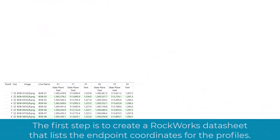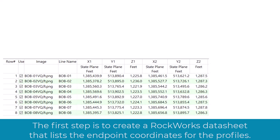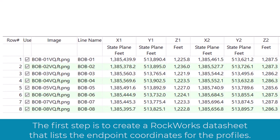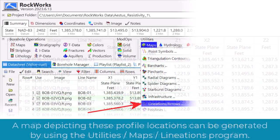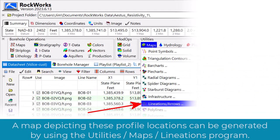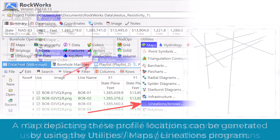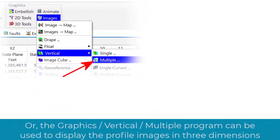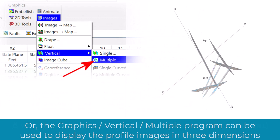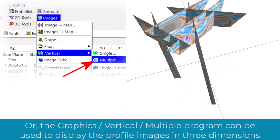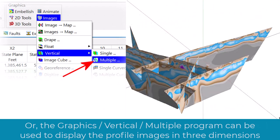The first step is to create a Rockworks datasheet that lists the endpoint coordinates for the profiles. A map depicting these profile locations can be generated by using the Utilities Maps Lineations program, or the Graphics Vertical Multiple program can be used to display the profile images in three dimensions.